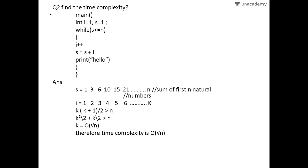Initially, both s and i are 1. For the second value of i, which is 2, the second value of s will be s plus i, which is the sum of the first 2 natural numbers, giving us 3. The third value of i will be 3, and the third value of s is the sum of the first three natural numbers: 1 plus 2 plus 3 equals 6.